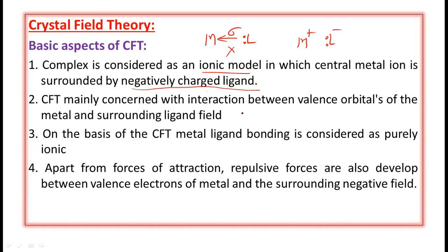On the basis of CFT, metal-ligand bonding is considered as purely ionic, because there is an electrostatic force of attraction between the metal and the ligand. As ligands are negatively charged and metals are positively charged species, there is a positive-negative electrostatic attraction. That is why on the basis of CFT, the bond between the metal and the ligand is purely ionic — it totally neglects the covalent bonding.